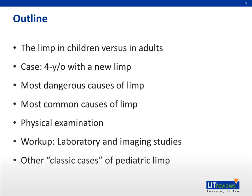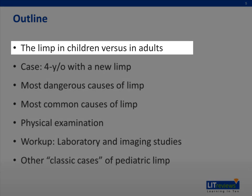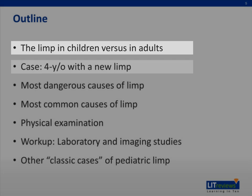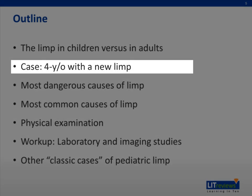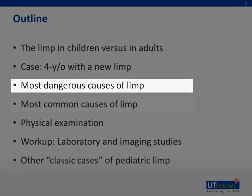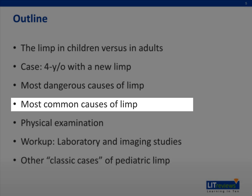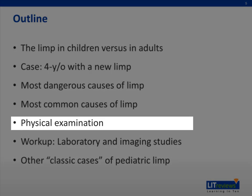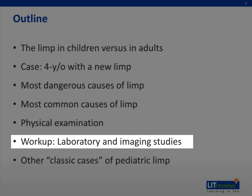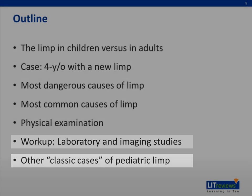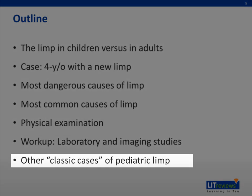In the course of this talk, we'll discuss what makes limp in children different from in adults. We'll talk about the case of a four-year-old who presents with a new limp, and discuss the most dangerous as well as the most common causes of limp in children. We'll talk about the basic physical examination skills for children with a limp, as well as laboratory and imaging to help make the diagnosis. Finally, I'll leave you with some classic cases — both vignettes and radiographic findings — to help you think about pediatric limp.